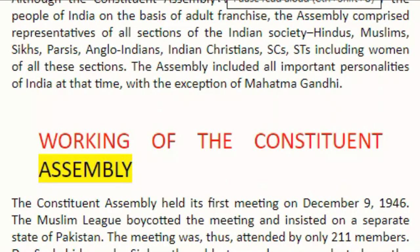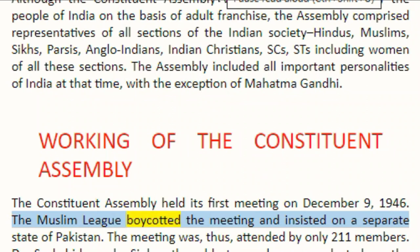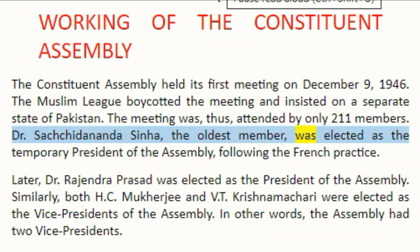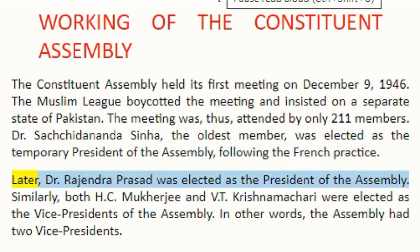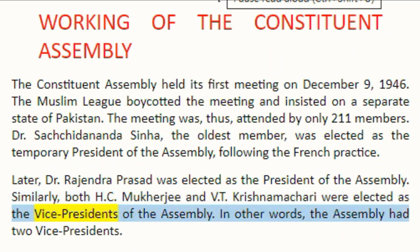Working of the Constituent Assembly. The Constituent Assembly held its first meeting on 9 December 1946. The Muslim League boycotted the meeting and insisted on a separate state of Pakistan. The meeting was thus attended by only 211 members. Dr. Sachchidananda Sinha, the oldest member, was elected as the temporary president of the assembly, following the French practice. Later, Dr. Rajendra Prasad was elected as the president of the assembly. Both H.C. Mukherjee and V.T. Krishnamachari were elected as the vice presidents of the assembly.